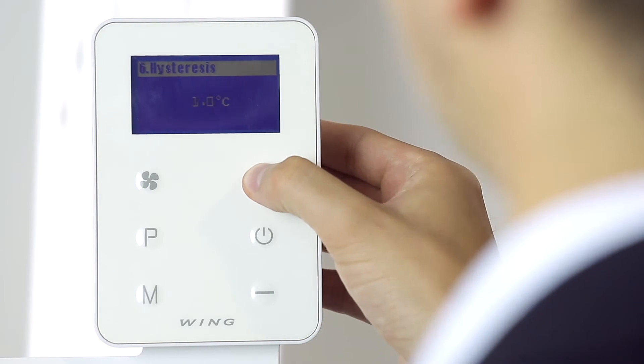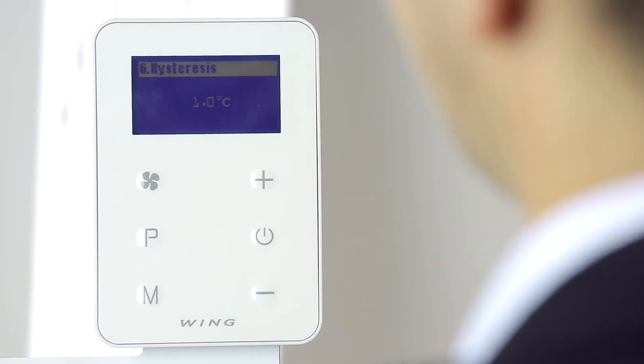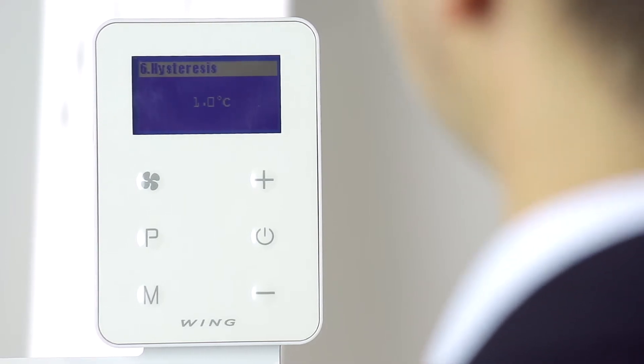if we had set the hysteresis differential at one degree and we have a set temperature of 20 degrees, the device will switch on when the actual room temperature reaches 19 degrees.